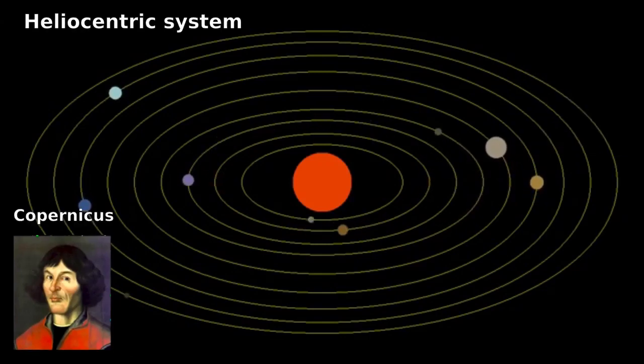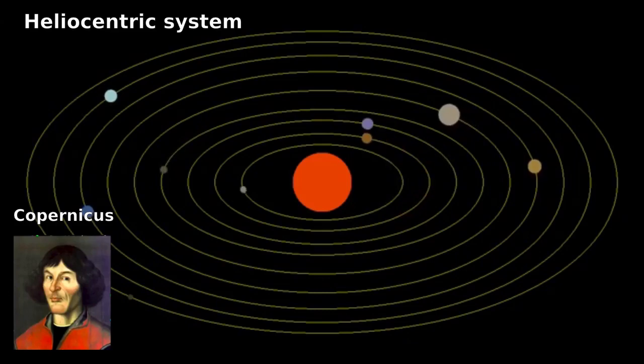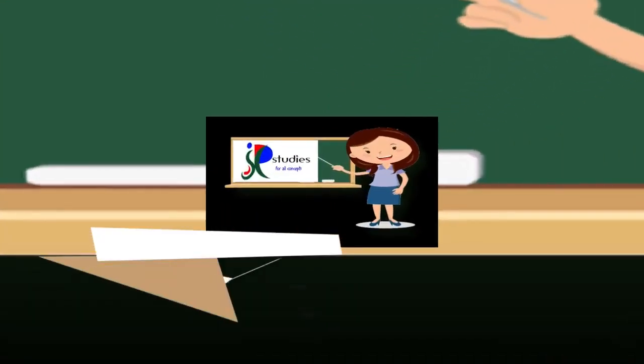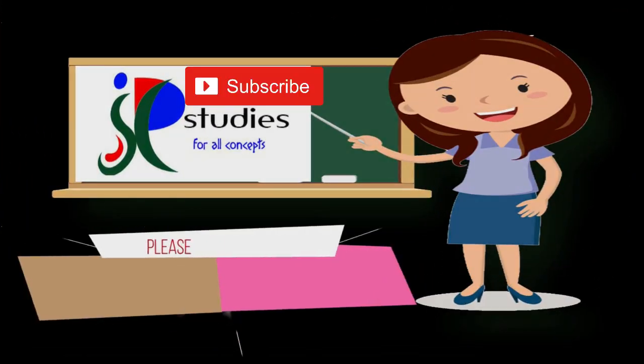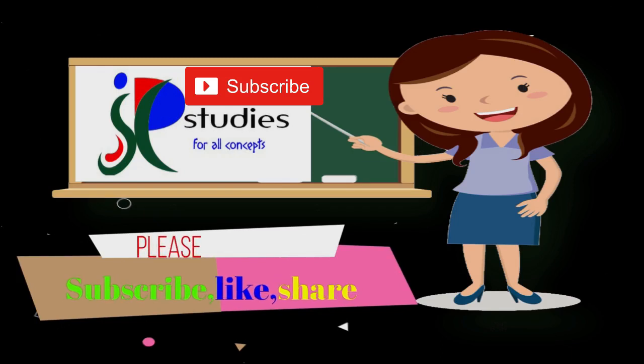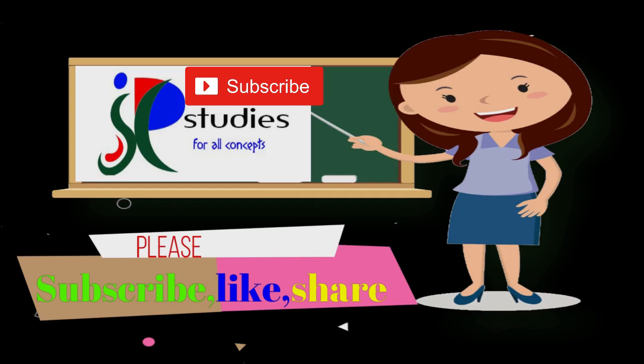Copernicus proposed this as the sun-centered theory, which is also known as the heliocentric system. The Sun and the Moon also move around the Sun, which is the reason we see the Sun in the sky.